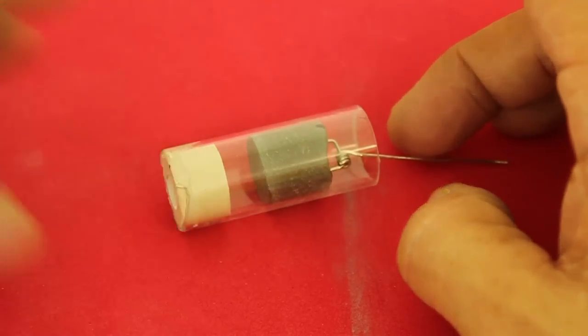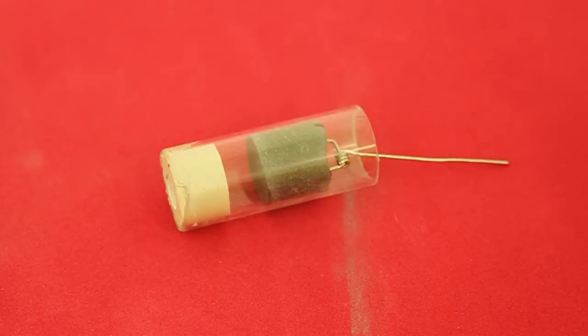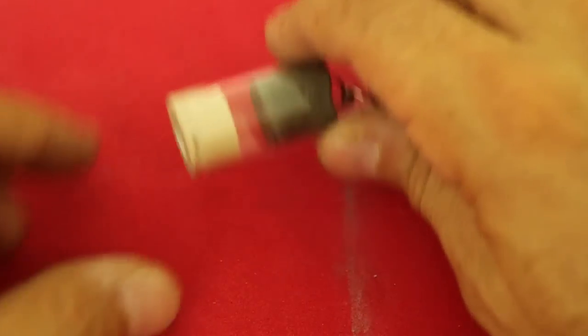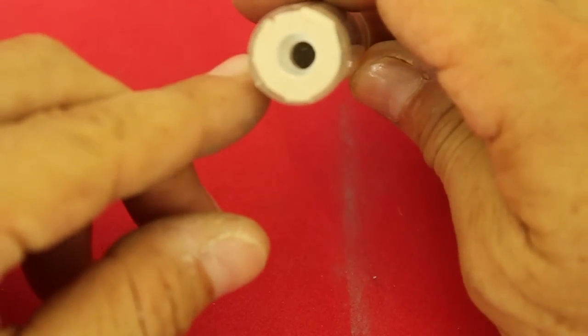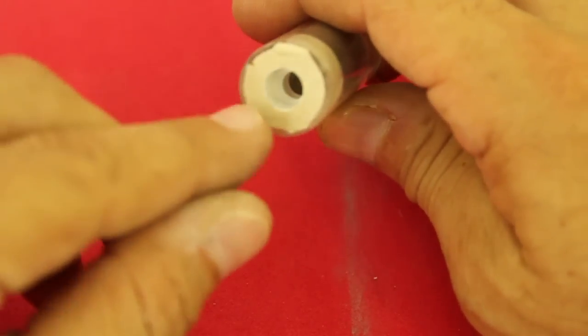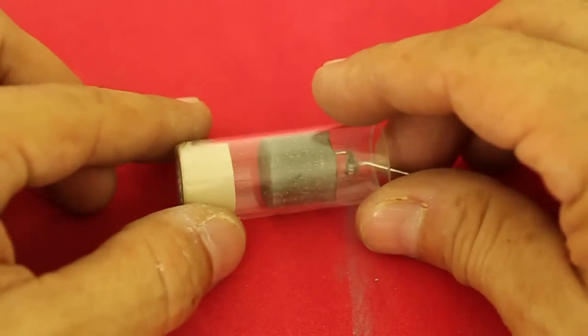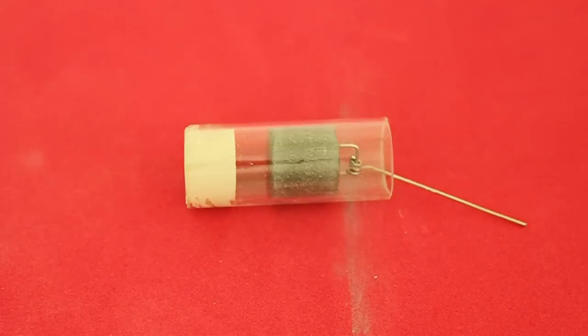I have a video on how I made this piston cylinder arrangement. If you didn't see it, I have a link in the description of this video. In the base we have a hole. This is also made of epoxy putty and here we insert the hose that comes from the displacer cylinder.